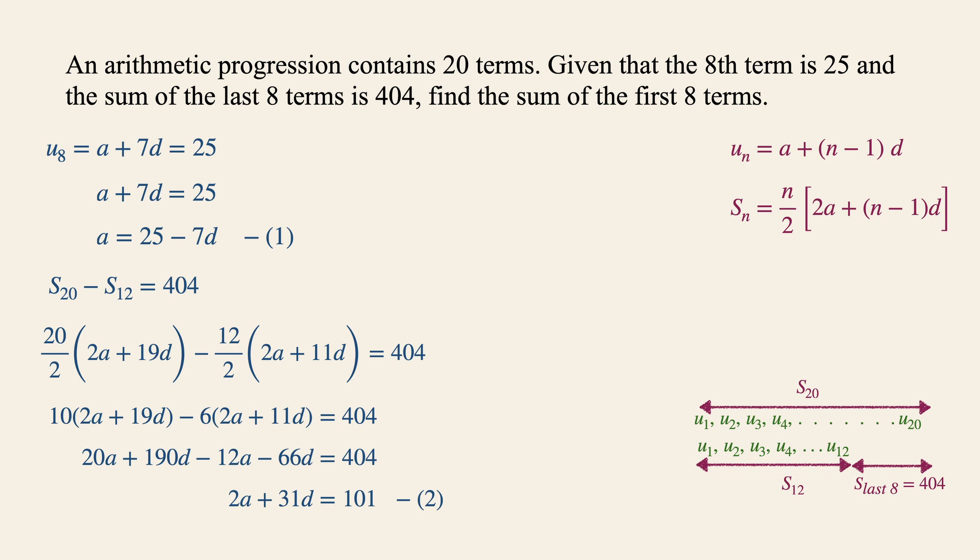Now the idea over here is to find the values of A and D respectively so that we can answer to the question. Now let's substitute equation 1 into equation number 2 over here. This will give us 2 25 minus 7D plus 31D equals to 101. Now the next thing to do is to find the value of D by simplifying further we will have 50 minus 14D plus 31D equals to 101. 17D is equals to 51 which is a very nice number because D will give us a value of 3.